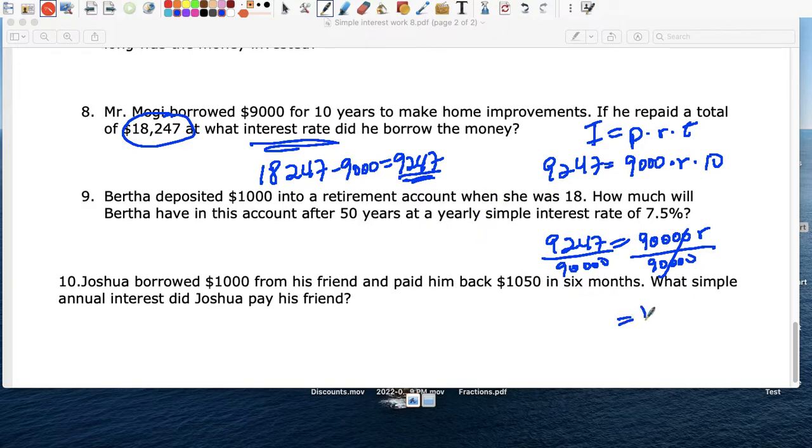We get 9,247 divided by 90,000. So our interest rate here, if you look at the decimal, is 0.1027. If I can move this over, or multiply by 100, the percent is 10.27%, rounded.